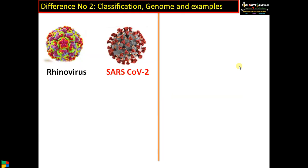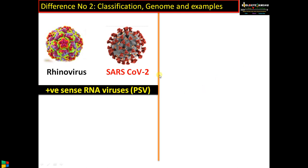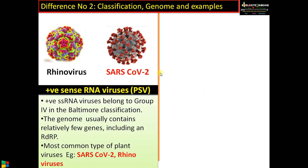Difference number two: classification, genome, and examples. PSV belongs to Group 4 in the Baltimore classification system. The genome usually contains relatively fewer genes compared to negative sense RNA viruses, and it is the most common type of plant viruses. It includes SARS-CoV-2, causing COVID-19 infection, and also rhinoviruses, causing the common cold.